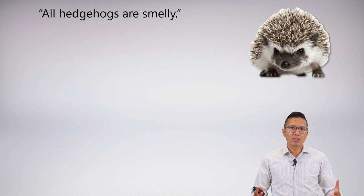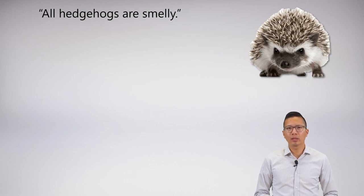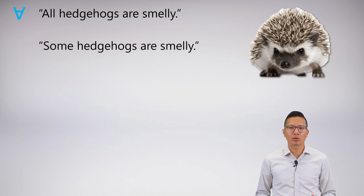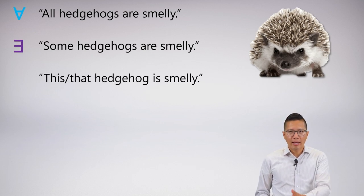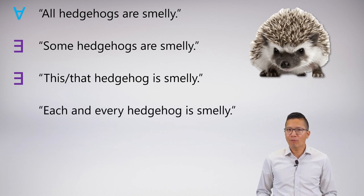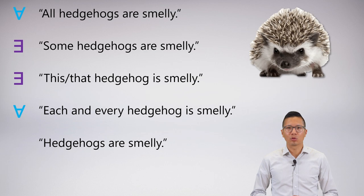When we're looking at a sentence, one of the first things we want to do is determine whether it's a universal or an existential. If I say 'all hedgehogs are smelly,' clearly this is a universal statement. If I say 'some hedgehogs are smelly,' clearly that's an existential. If I say 'each and every hedgehog is smelly,' that's just a variant of the universal. And here is my zero article example: if I say 'hedgehogs are smelly' making a general claim, this is a universal.